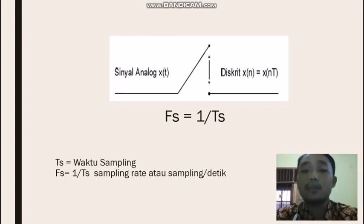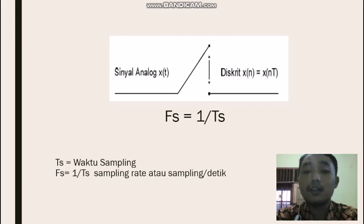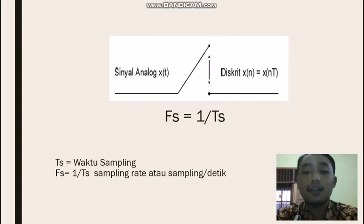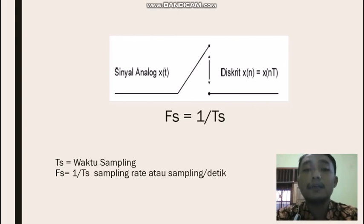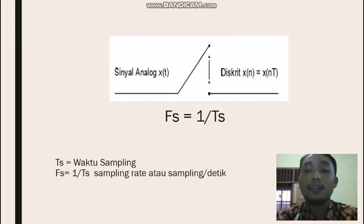Rumus berikutnya adalah F_s sama dengan 1 per T_s. F_s sendiri adalah sampling rate atau sampling per detik, T_s adalah waktu sampling. Jadi frekuensi sampling cara menghitungnya adalah 1 per T_s. Waktu sampling bisa dilihat dari gambarnya, yaitu jarak antara sinyal analog ke sinyal diskret adalah T_s.